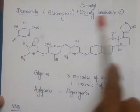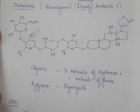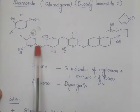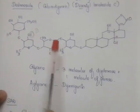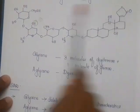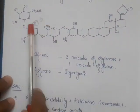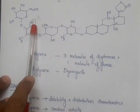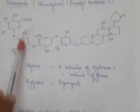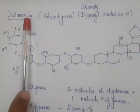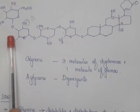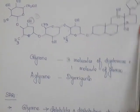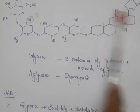Deslanoside is similar to digoxin, but with one additional glucose attached — that's why it is called glucodigoxin. Its other name is desacetyl lanatoside C. In lanatoside C, the structure is the same as deslanoside except that an acetyl group is added. Since the acetyl group is absent in deslanoside, it is called desacetyl lanatoside C. The glycone present is three molecules of digitoxose plus one glucose, and the aglycone is digoxigenin, which has two hydroxy groups at C12 and C14.